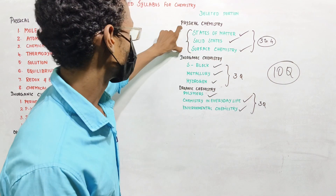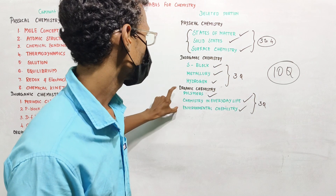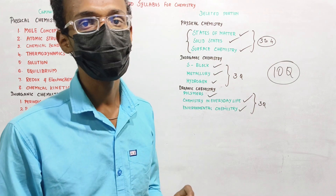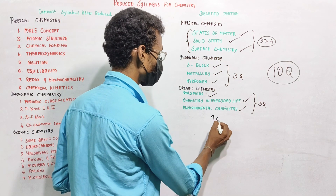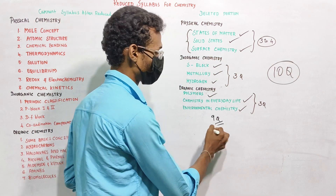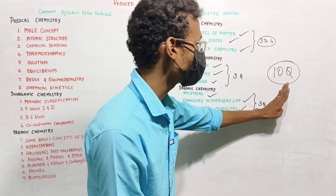So, physical chemistry has 3 lessons, inorganic has 3, and organic has 3. If you want to cover these nine lessons, you can target around ten questions. Then the question is: which are those ten questions you can write?